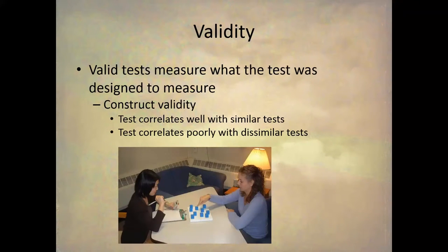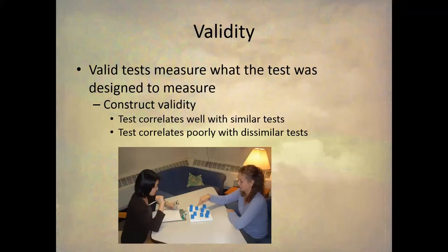Now let's say we found a test that has validity and reliability information, or we want to create a test and generate our own validity and reliability information. What are these concepts? First, validity: a valid test measures what it was designed to measure. If I have a test I expect to measure body image beliefs, it should only measure body image beliefs and should not measure self-esteem or mood. Sometimes questions on tests will pick up two different constructs, but validity means the test only measures the one construct you intend it to.